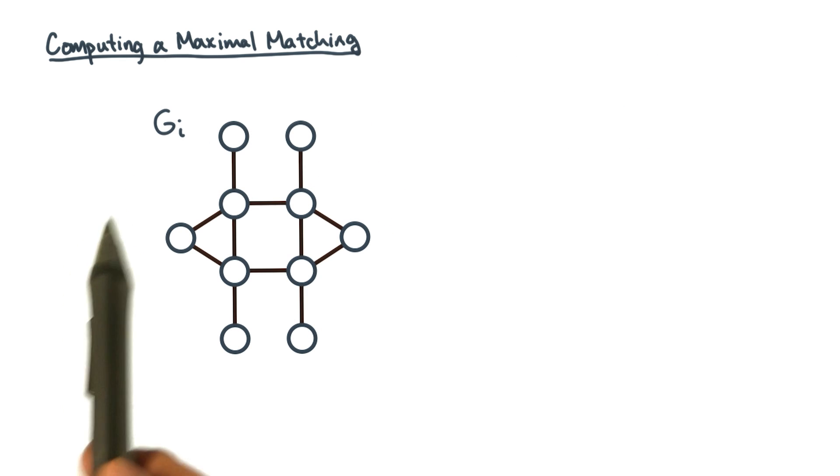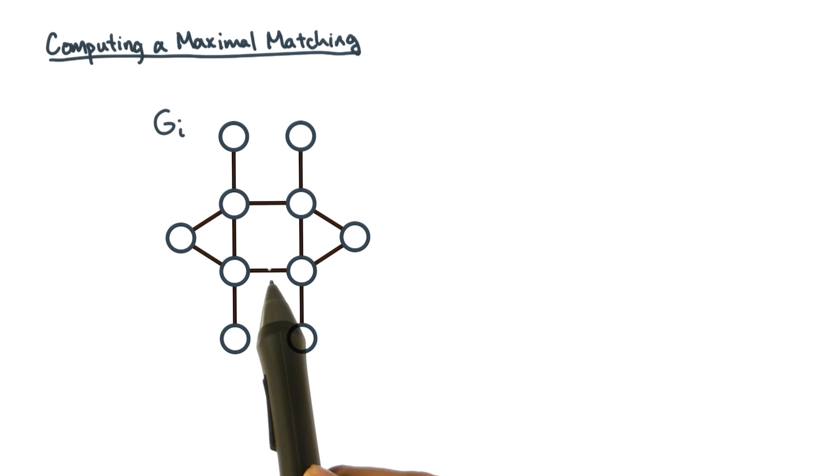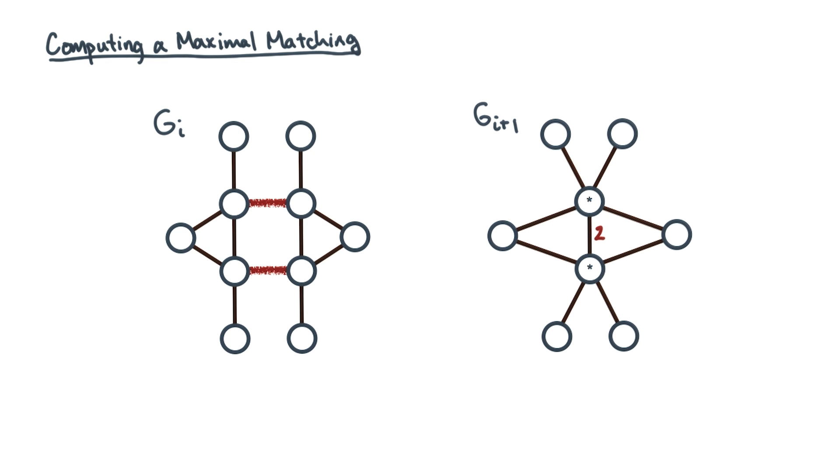Consider some graph G_i. Suppose we were to match these two edges. Contracting them would yield a coarsened graph, let's call it G_{i+1}. Note the edge weight of two that connects the two super vertices.